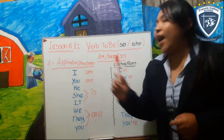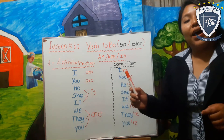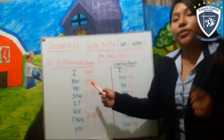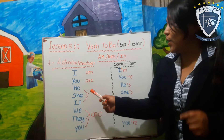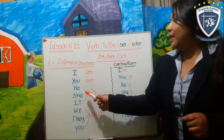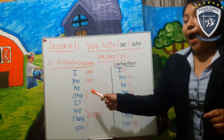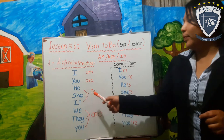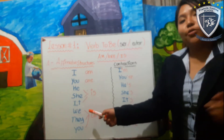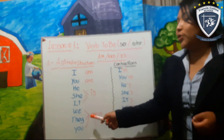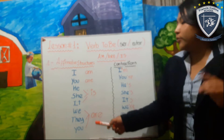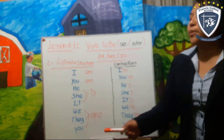We have: I — yo; You — tú; He — él; She — ella; It — eso; We — nosotros; They — ellos; You — ustedes.